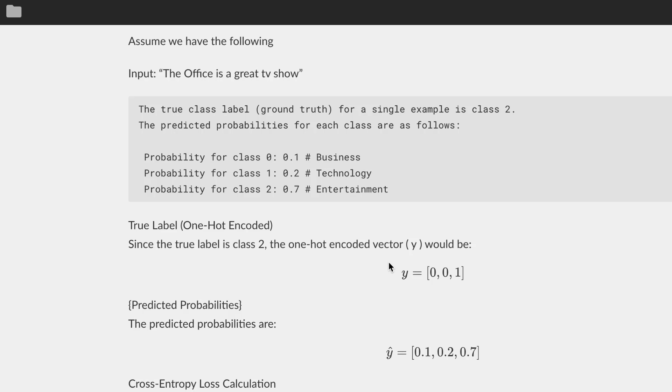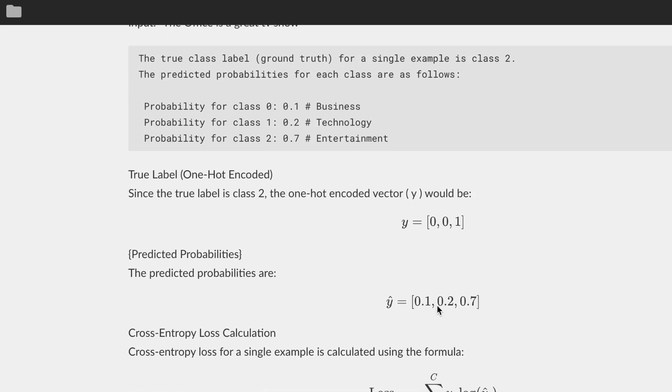Now we need to one-hot encode the true label of the sentence. That means we get a zero for business, a zero for technology, and a one for entertainment. So this is the true label for this sentence.